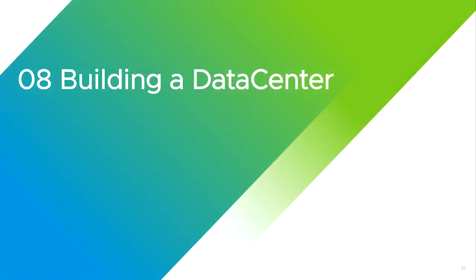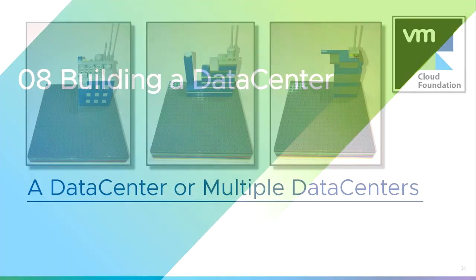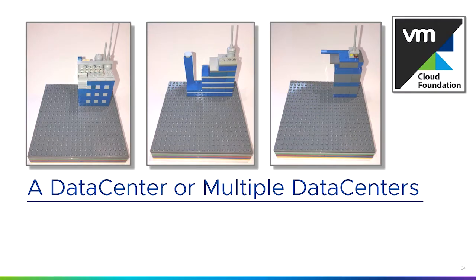Once we've got a platform, we build a data center, and typically we'll build multiple different data centers in multiple different locations. We have three instances of Cloud Foundation here — the grey bits — with the actual compute, storage, and networking underneath — the green, red, blue, and yellow components. We've simplified it as a single platform, and we have that same platform — Cloud Foundation — in three different locations or three different data centers. It's the same software running at both sites, even though the hardware underneath might be slightly different.